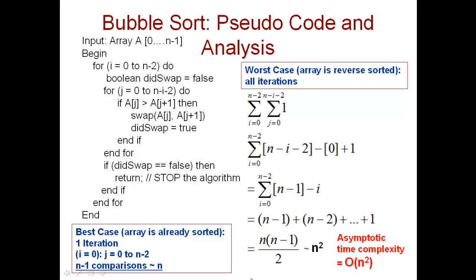This sum evaluates to n times n minus 1 over 2, which is approximately n squared comparisons. So the best case is n minus 1 or n comparisons, and the worst case is n times n minus 1 over 2, which is approximately n squared. Since the best case is different from the worst case, we use the big-O notation and write inside it the worst case, which is n squared.